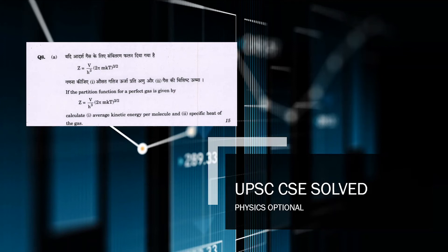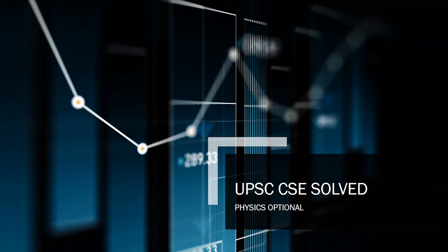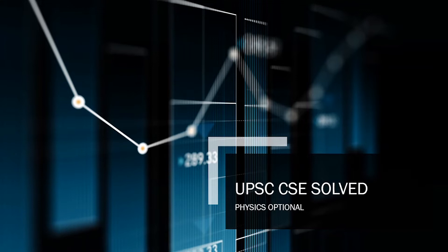Hello everyone, in today's video we will be solving one of the previous year question papers of UPSC CSE physics optional. So here's the question. We are given the partition function for perfect gas that is equal to Z equals V by h cubed times 2 pi m kB T to power 3 by 2 for perfect gas.